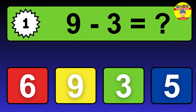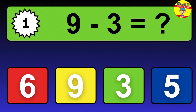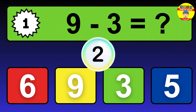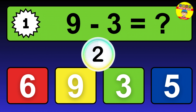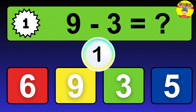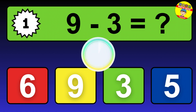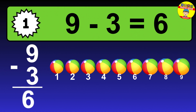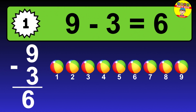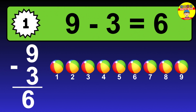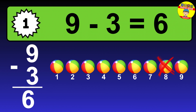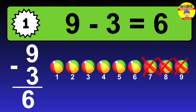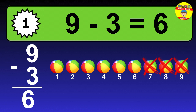Question 1. 9 minus 3 equals what? The answer is 9 minus 3 is 6. Let's count it: 1, 2, 3, 4, 5, 6.